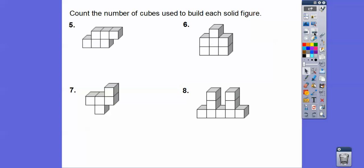Count the number of cubes used to build each solid figure. Here: one, two, three, four, five, six — there are six cubic units in that one. Here: one, two, three, four, five, six — there are seven in that one.